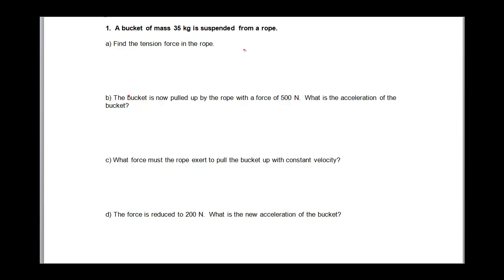So I have a bucket of 35 kilograms suspended from a rope. So I got 35 kilograms, and it has a rope that's got tension pulling up. Now we know that weight is going to pull down on it, the force of gravity. How much is the force of gravity? The force of gravity is 35 kilograms times 10 meters per second squared, or 350 newtons.